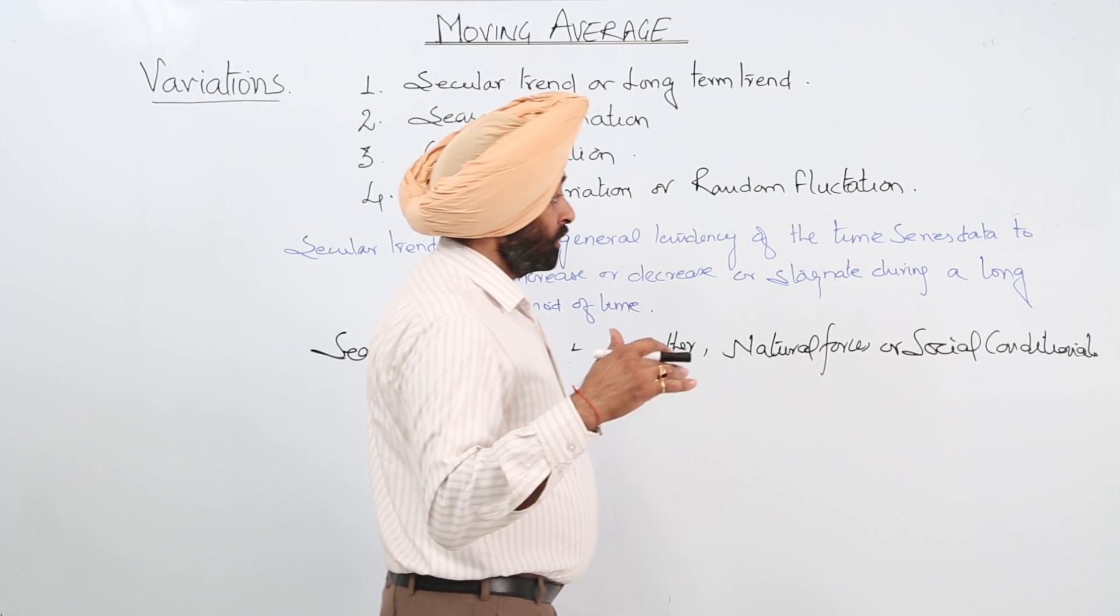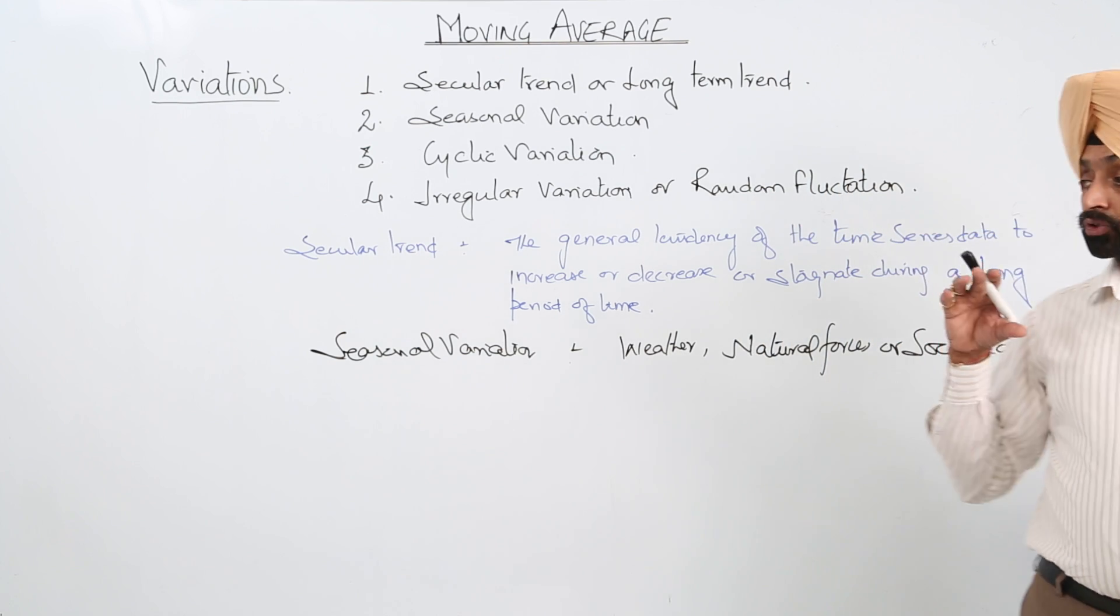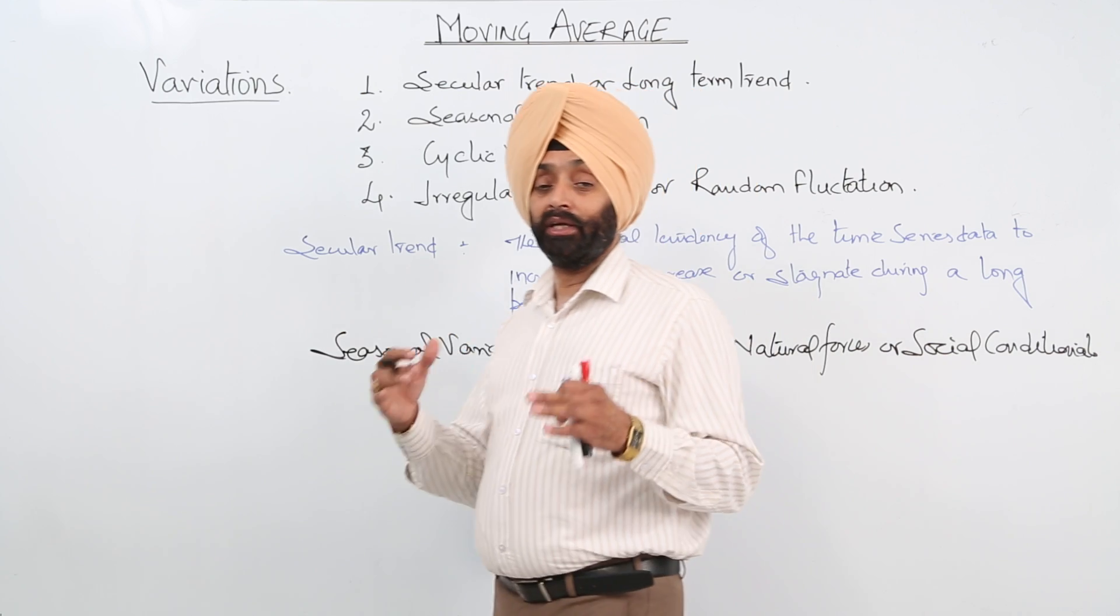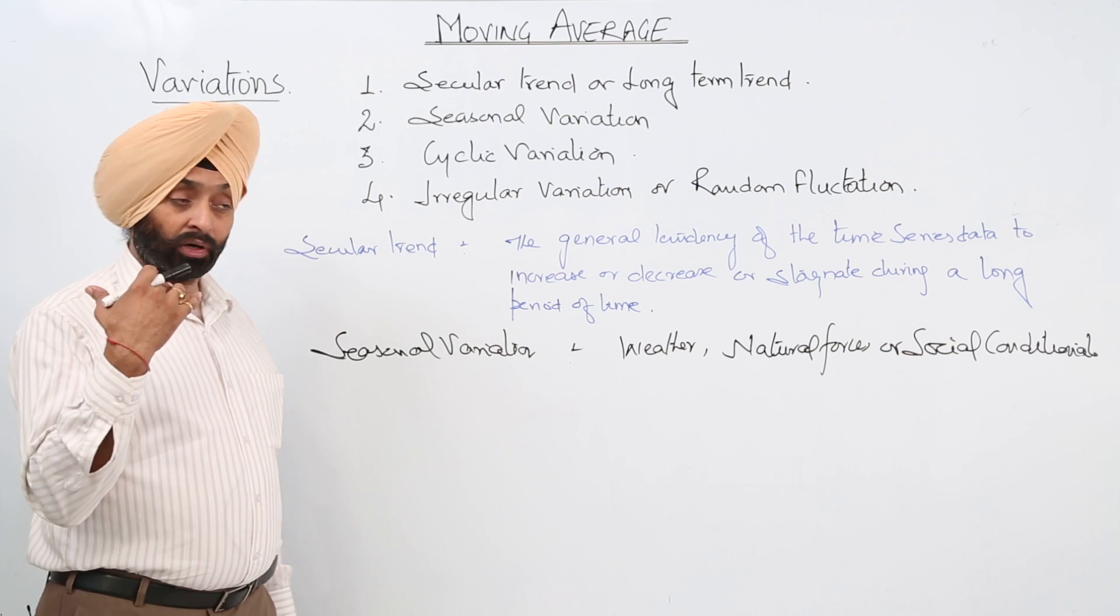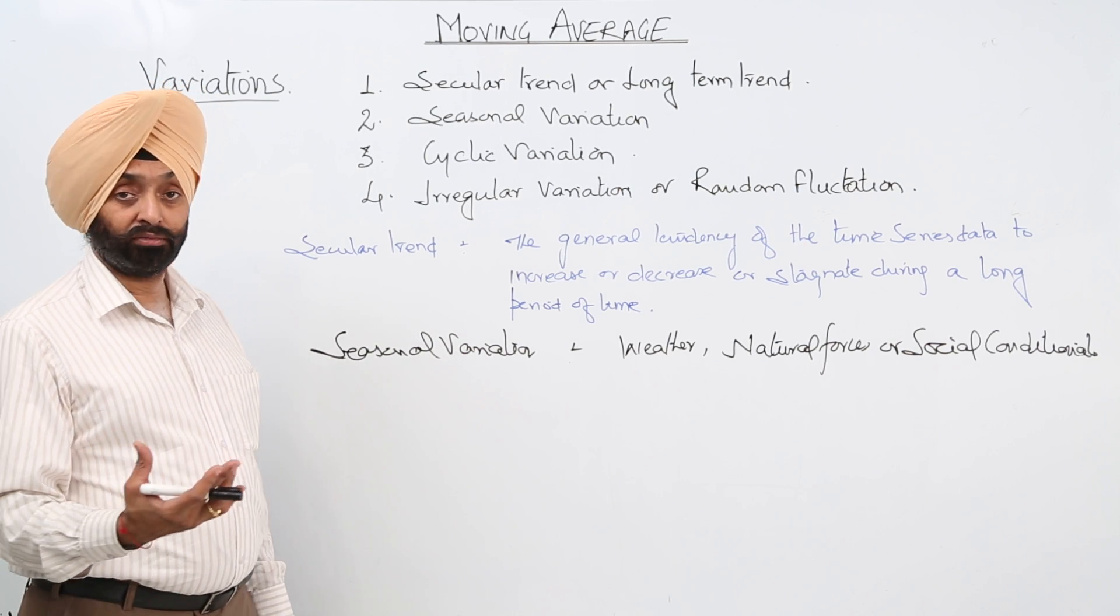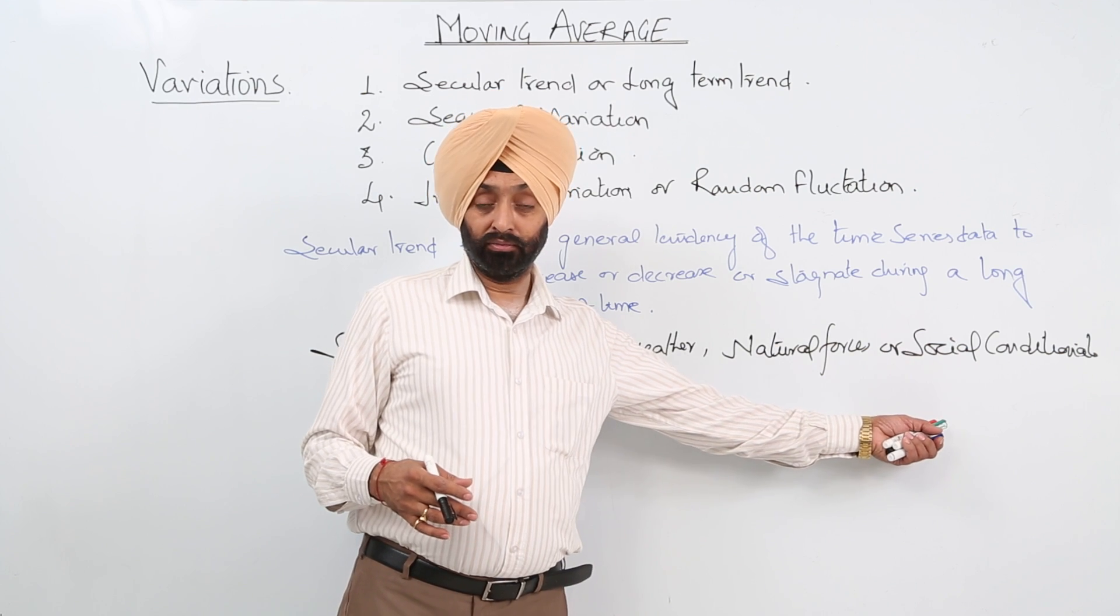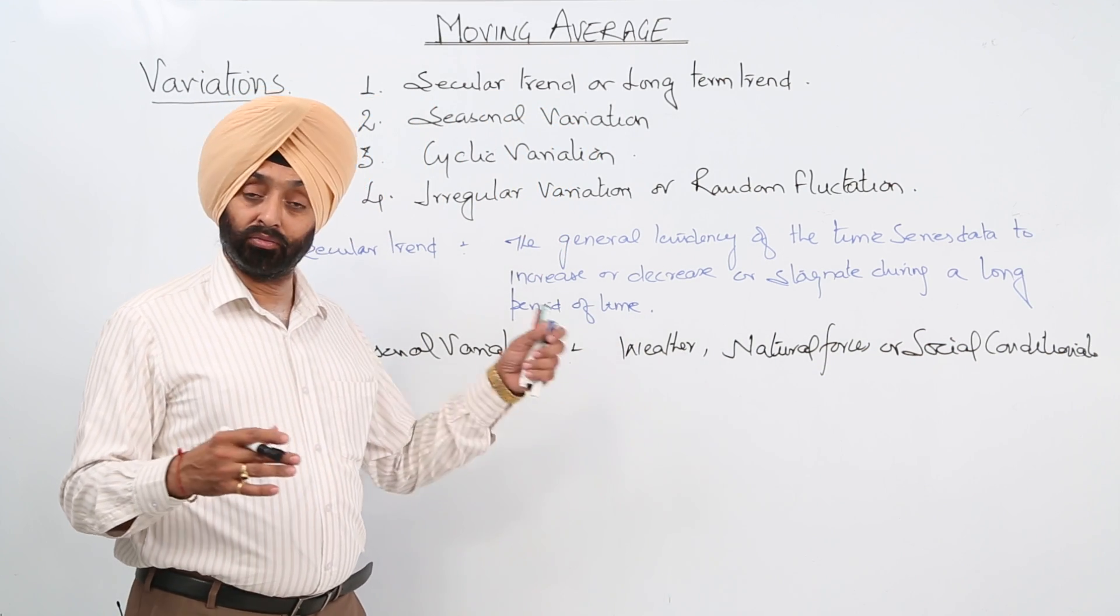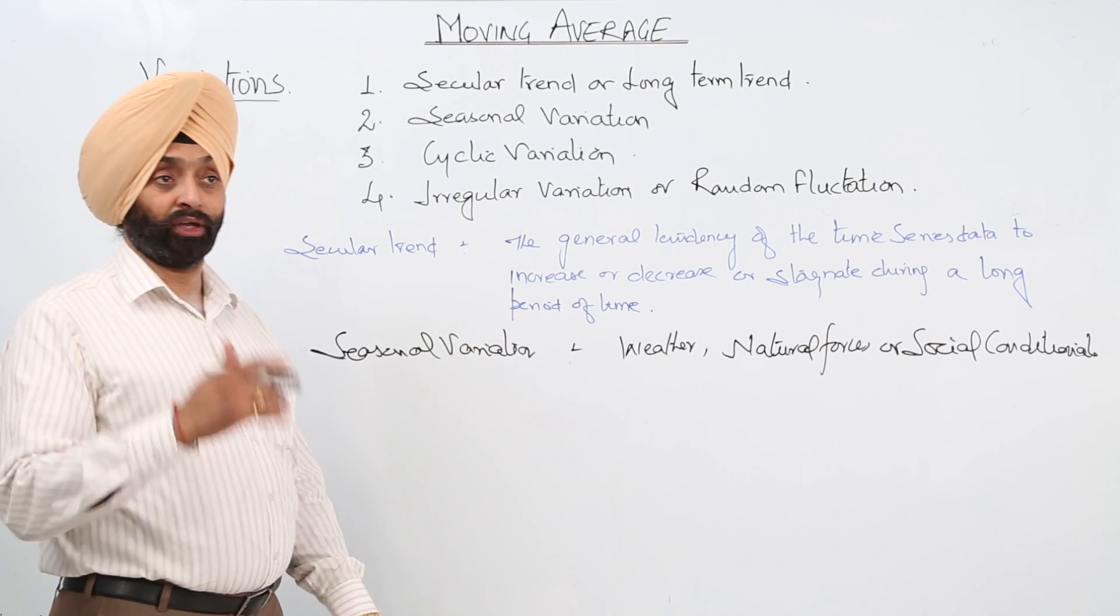Now sometimes what happens? For example, a stock - a person who is keeping a stock, he just makes the stock of some commodity and in the market the availability of that commodity decreases. To that also, that can be a social condition. Natural forces and the weather conditions normally they are equal. After that we are having cyclic variation.